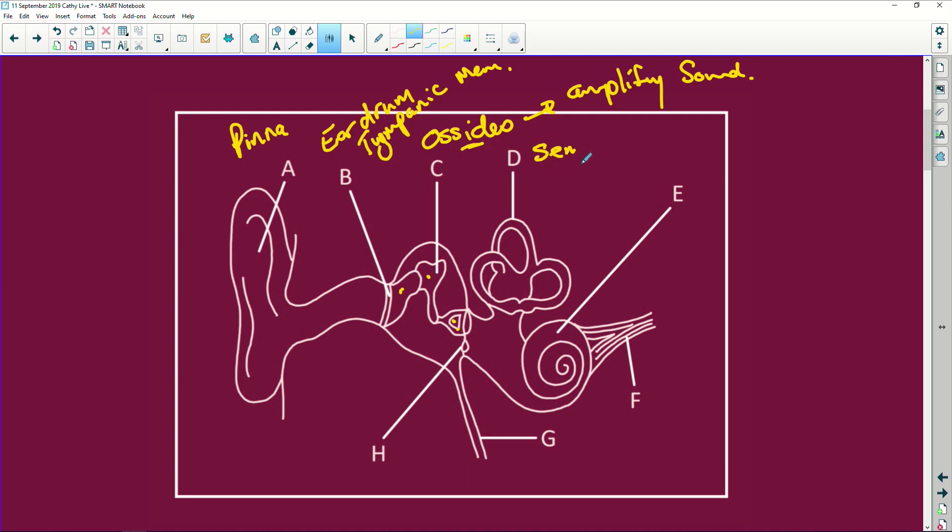All right. D, semicircular canals. All right. They are for balance and equilibrium, where your head is in relation to your body along a horizontal plane. So it tells you your speed and your direction. Then you've got the utriculus and the sacculus, which tell you where your head is in relation to gravity. So if you get airsick or seasick, it's these little macula in there that are causing it.